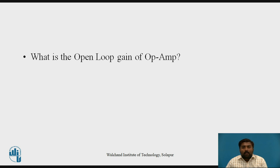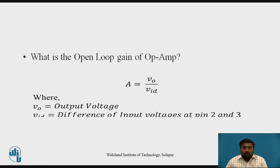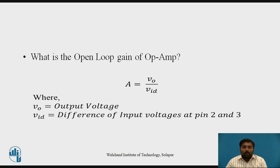Before starting with the actual session, let's pause the video and think about what is an open loop gain of an op-amp. The equation is nothing but A equals to V0 upon Vid, where A is the open loop gain, V0 is the output voltage, and Vid is the difference input voltage applied at pins number 2 and 3 of the op-amp.